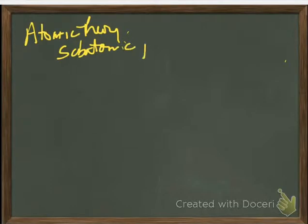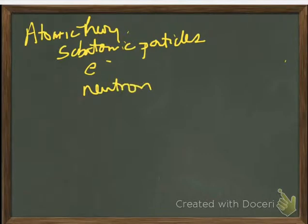Okay, so atomic theory. What we're going to look at first is the subatomic particles that are present in an atom. Those would be, of course, the electron, the neutron, and the proton.